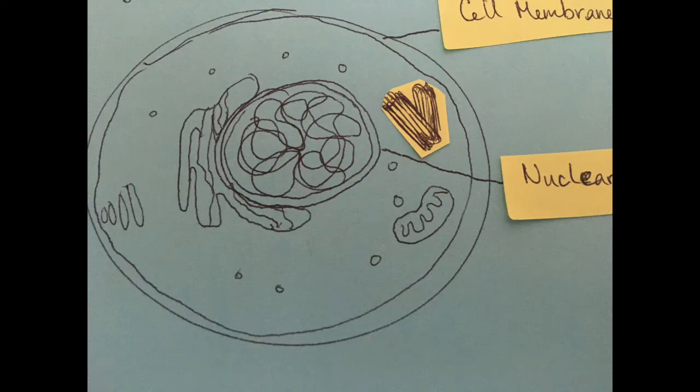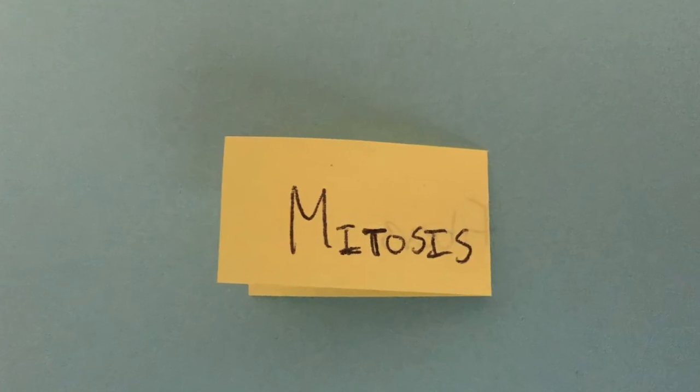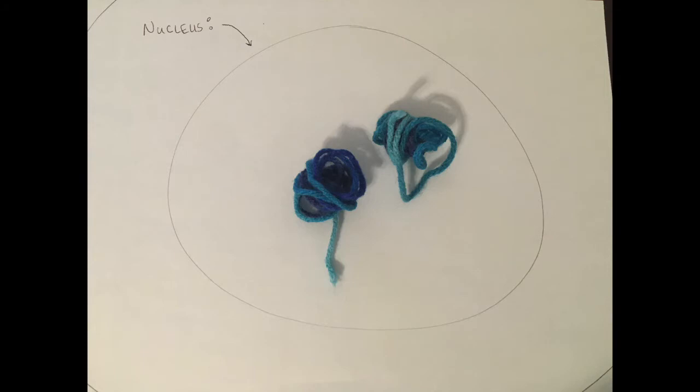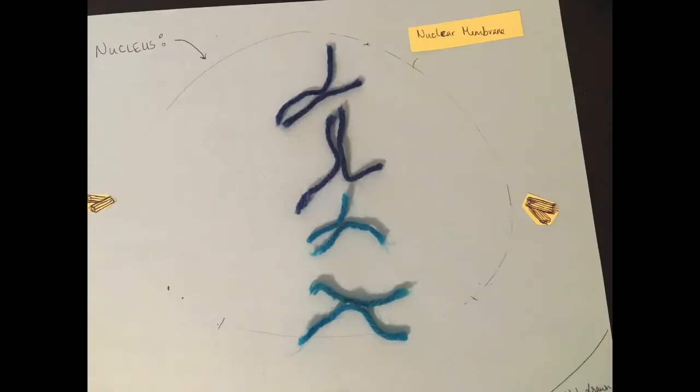Of course, during interphase, the cell's organelles also split. Now let's look at mitosis. The first step in mitosis is prophase, where the messy DNA organizes itself into chromosomes and the nuclear membrane disappears.